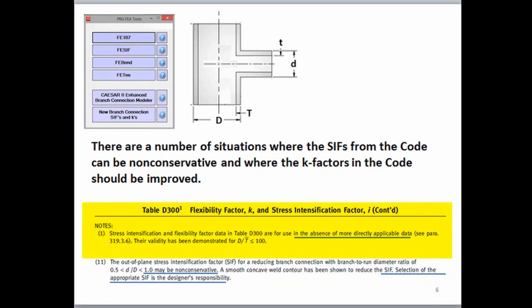Appendix D also tells us that the simplified equations in Appendix D should be used in the absence of more applicable data and for D over T values less than or equal to 100. FEA tools gives us more applicable data and can be used when the D over T ratio is greater than 100.